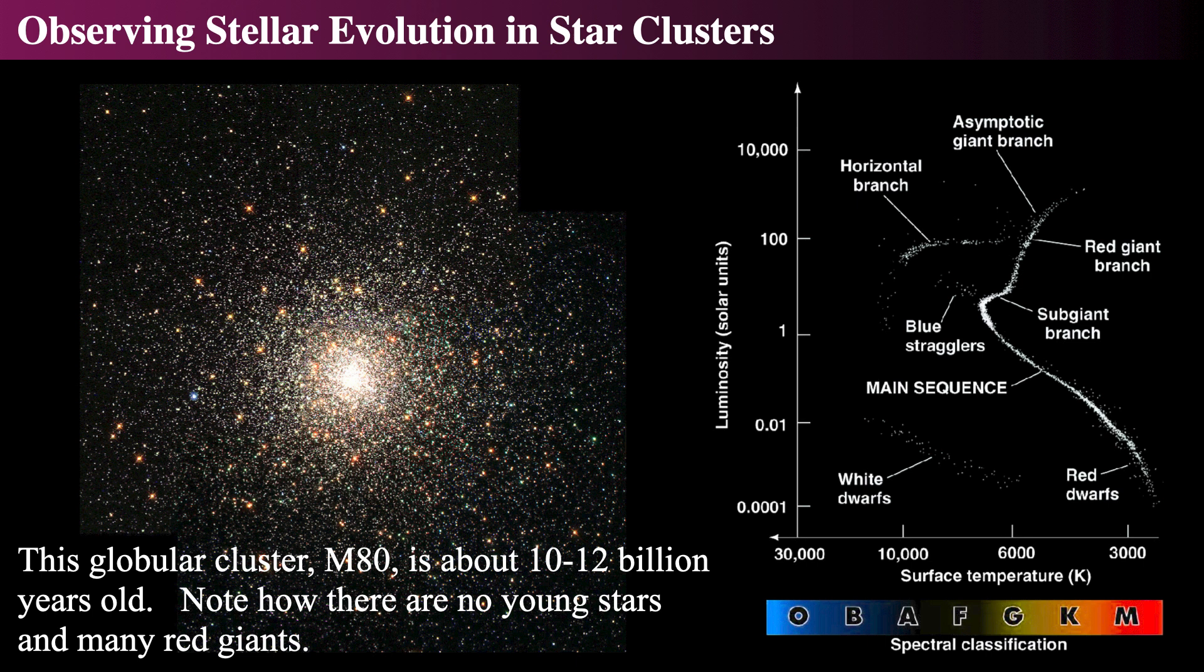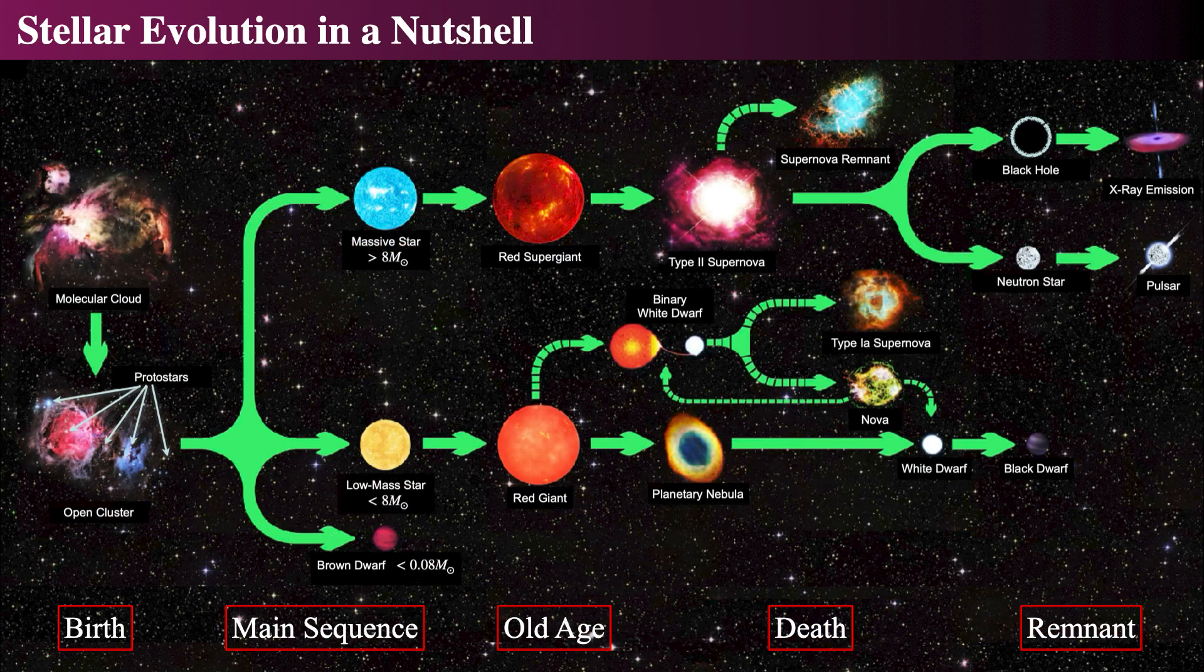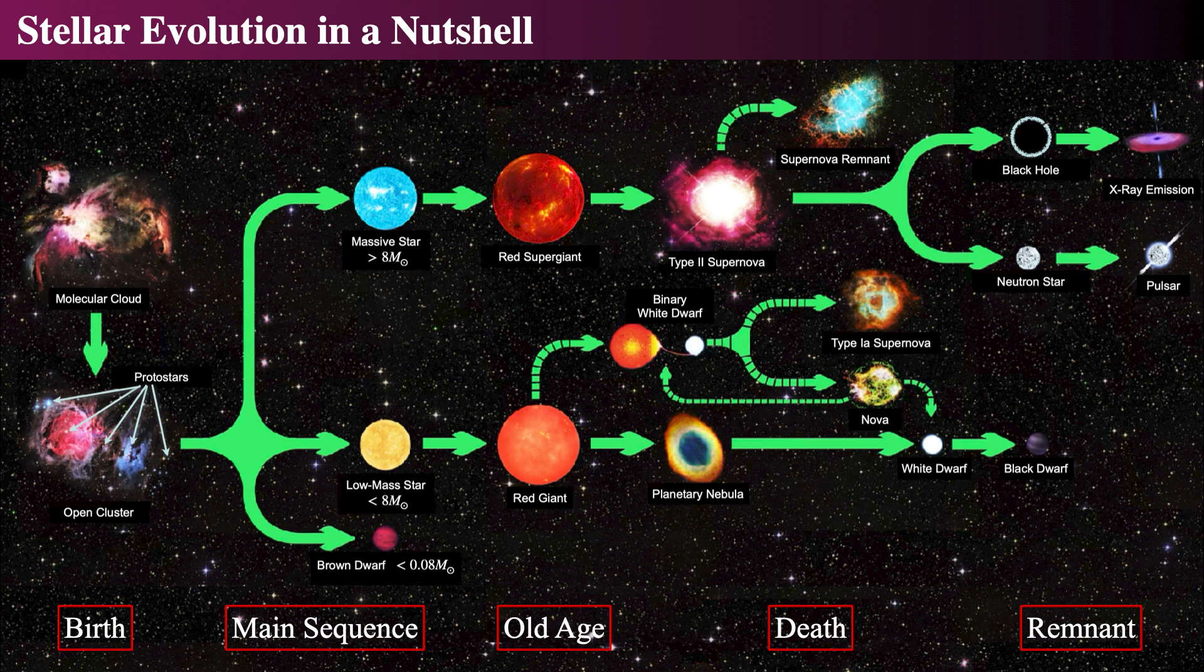Massive stars run through their tracks quickly, and low-mass stars run their tracks slowly. It is in this way, knowing the tracks of stars of different masses, that a cluster HR diagram will show its age. In many future lectures, we will dive deeply into all these phases, especially for massive stars.